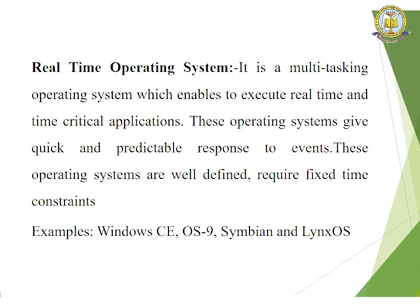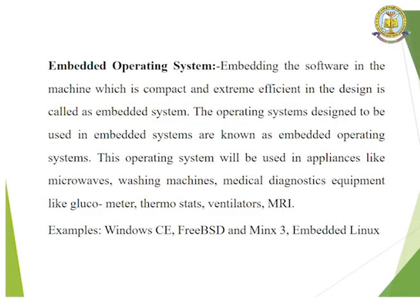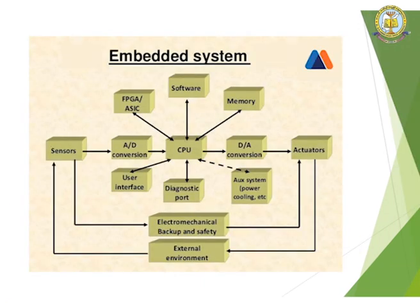Real-time operating system is a multitasking OS which enables execution of real-time and time-critical applications. These operating systems give quick and predictable response to events and require well-defined, fixed time constraints. Examples include Windows CE, OS-9, Symbian, and Linux. Embedded operating systems are software embedded in a machine that is compact and extremely efficient in design. The OS designed for embedded systems will be used in appliances like microwaves, washing machines, medical diagnostic equipment, etc. Examples include Windows CE, FreeBSD, Minix, and Embedded Linux.